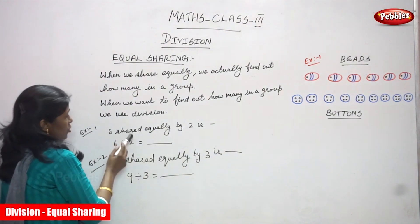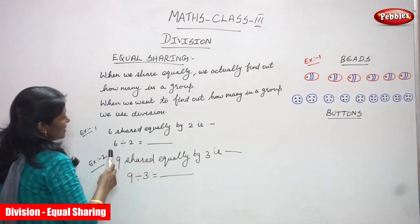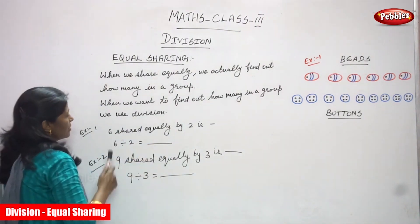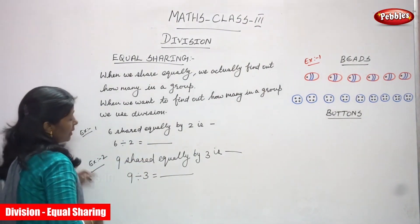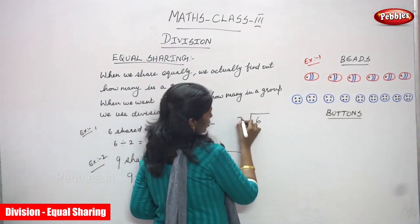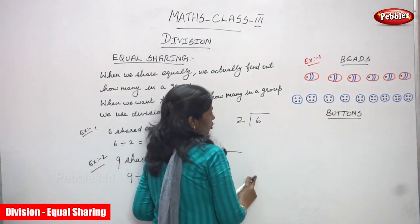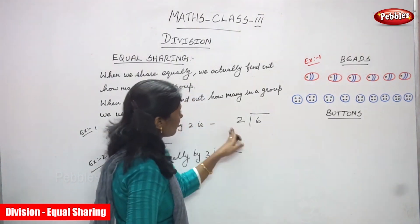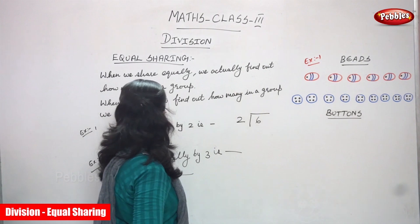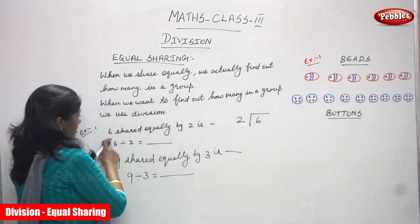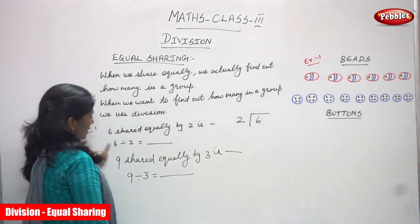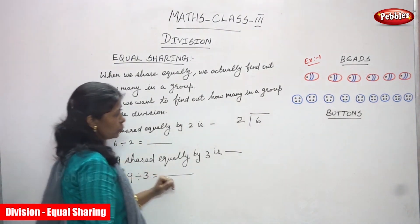6 shared equally by 2 is written as 6 divided by 2. You know that very well — 6 is divided by 2. 6 is the number shared equally by 2.